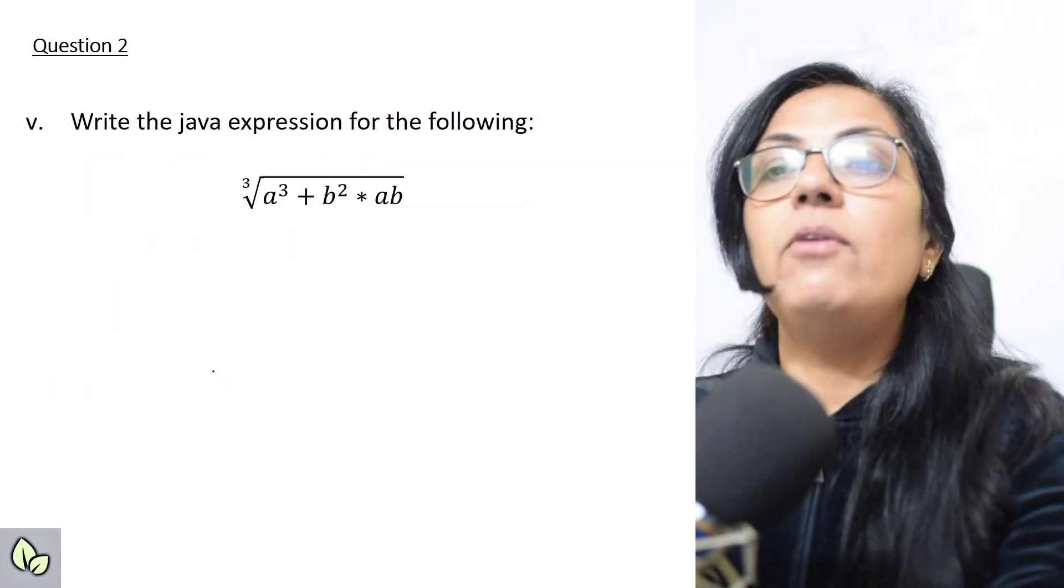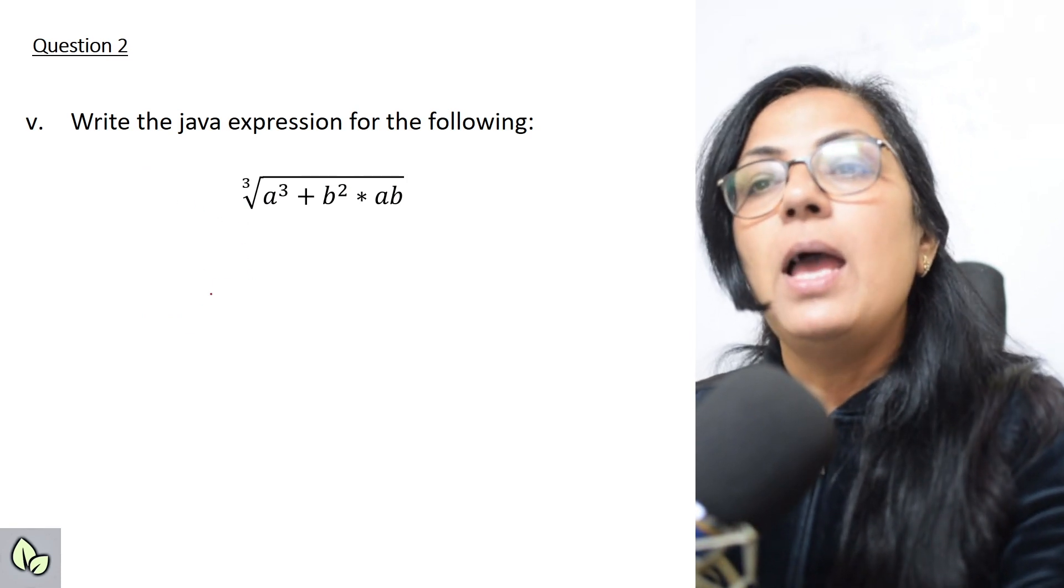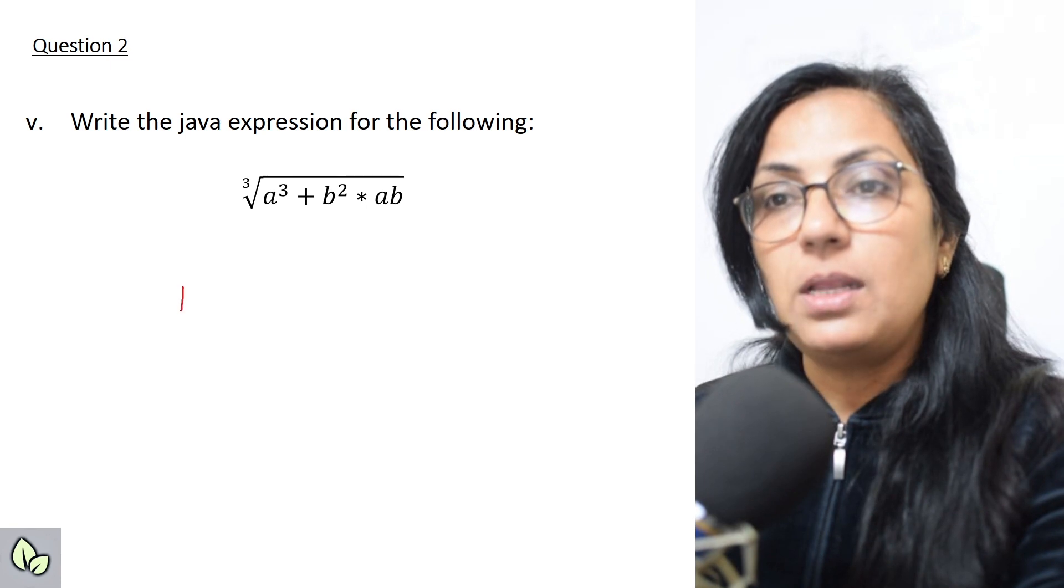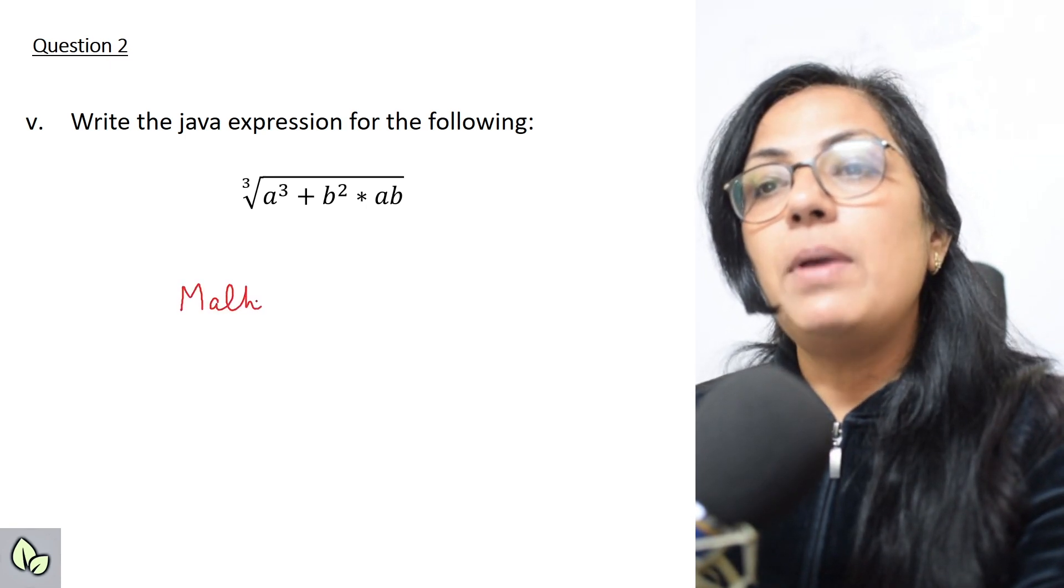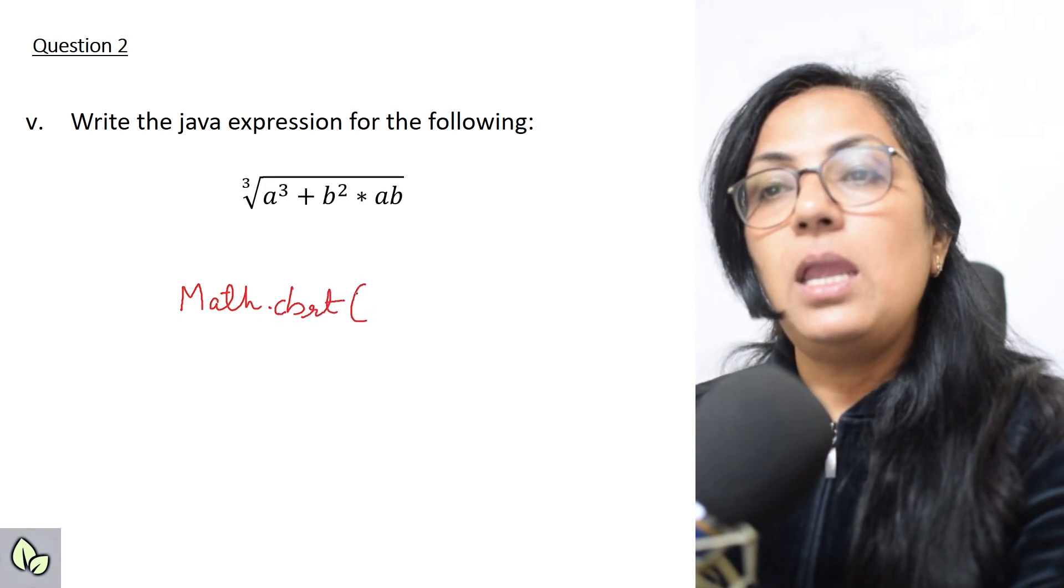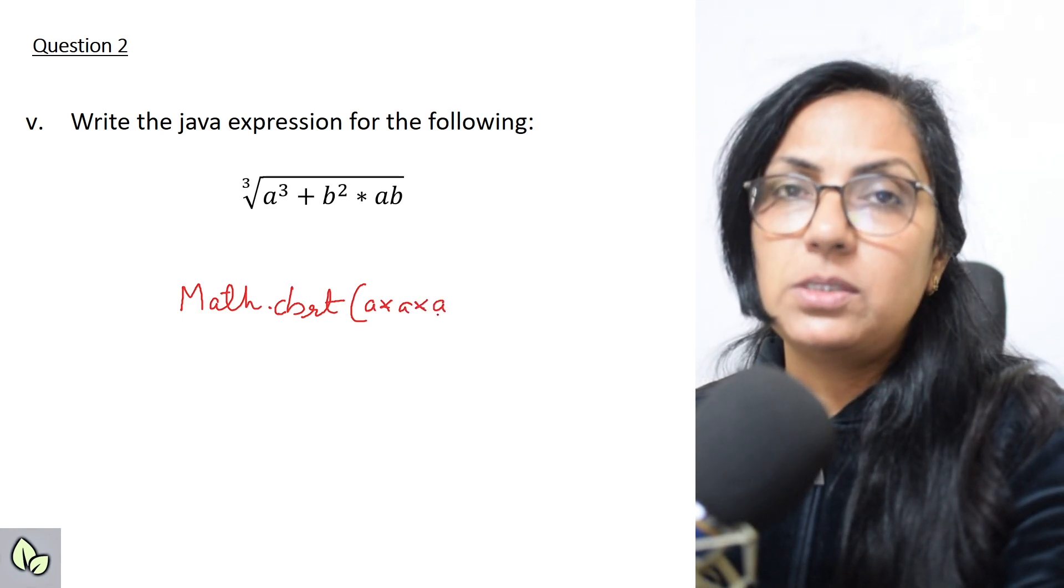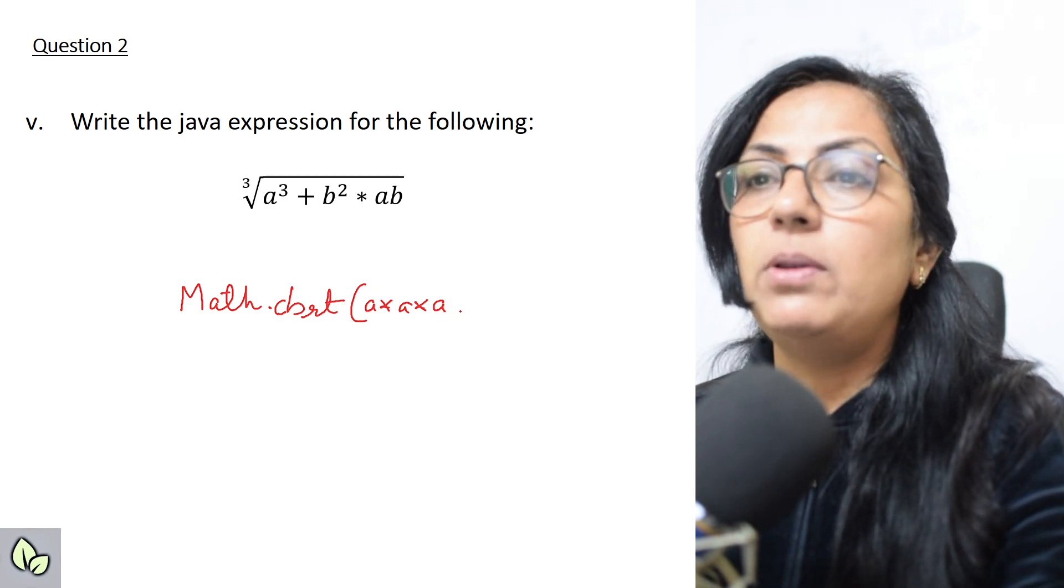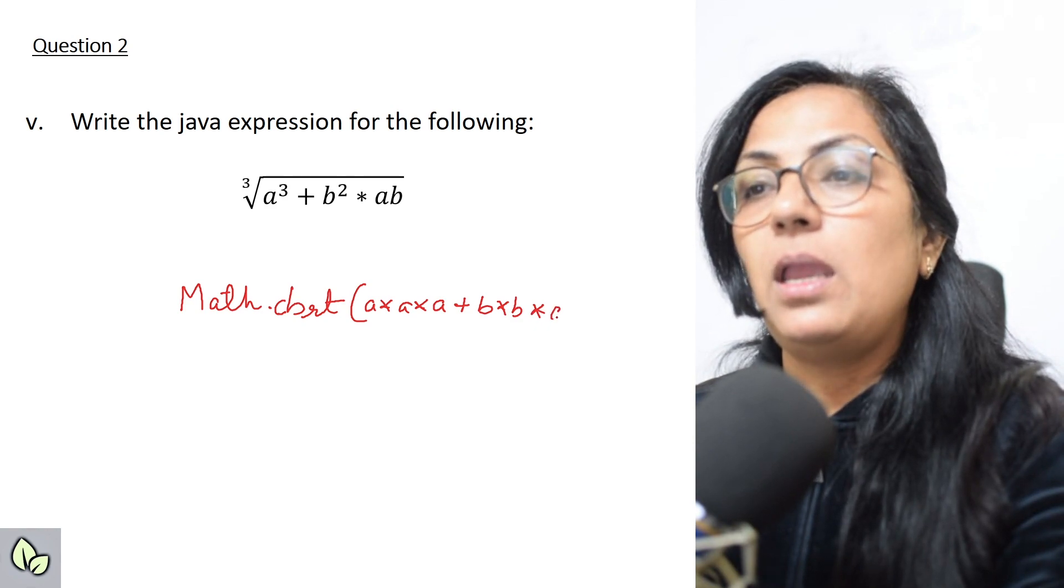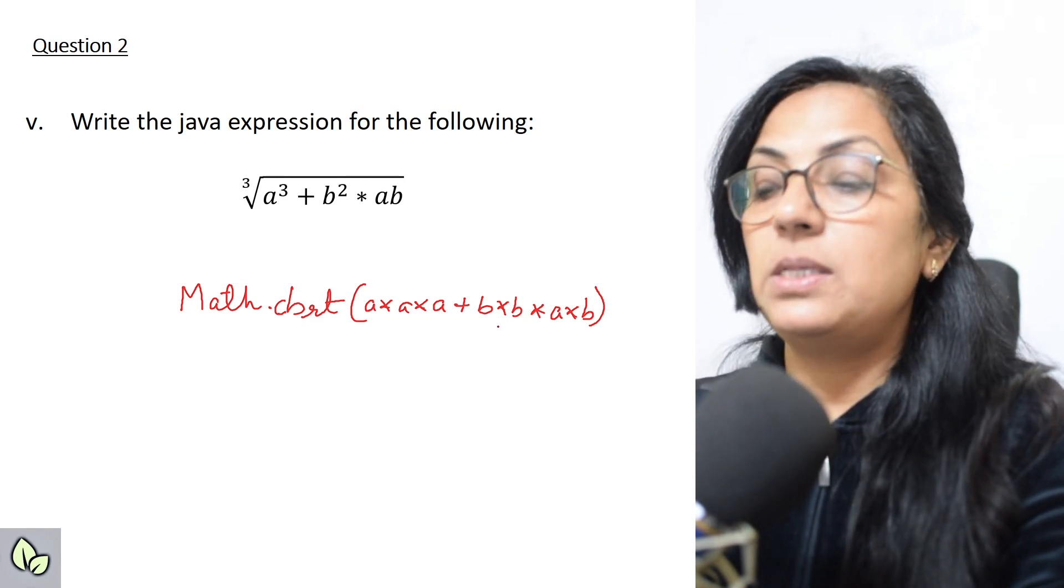We move on to the next question. Write the Java expression for the following. Now here, this is cube root. It is not three multiplied by square root. In your syllabus, you have the function math.cbrt function, and a cube here, to avoid any confusion, you can simply write multiplication symbol, or if you want you can write math.pow, plus b square, b into b, multiplied by a, multiplied by b. So this is your fifth question, and I hope these are clear to you children.